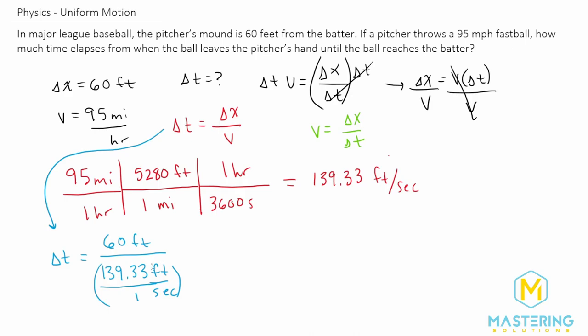We're dividing by a fraction right here. It's essentially over one. And when you divide by a fraction, it's the same as multiplying by the reciprocal. So the feet would then cancel out.